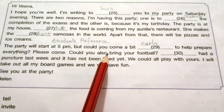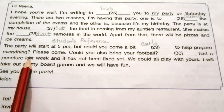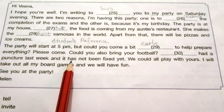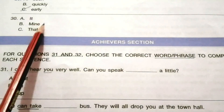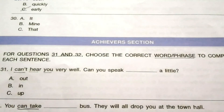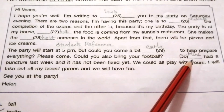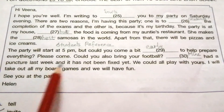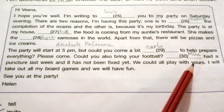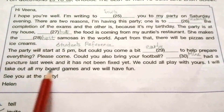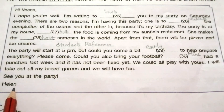'Please come. Would you also bring your football? Mine had a puncture last week and it has not been fixed yet.' Options: A) it, B) mine, C) that. The answer is B — mine. 'Mine had a puncture last week and it has not been fixed yet. We would all play with yours. I will take out all my board games and we will have fun. See you at the party. Helen.'